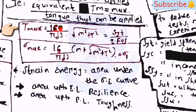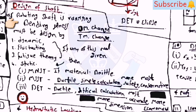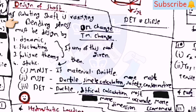Strain energy = area under the sigma-epsilon curve. Area up to elastic limit is resilience; area up to plastic limit is toughness. For design of a shaft, a rotating shaft has varying bending stress: dynamic, fluctuating, fatigue, and static theories. In static theory, priority is MNST first, then MSST, then DET.